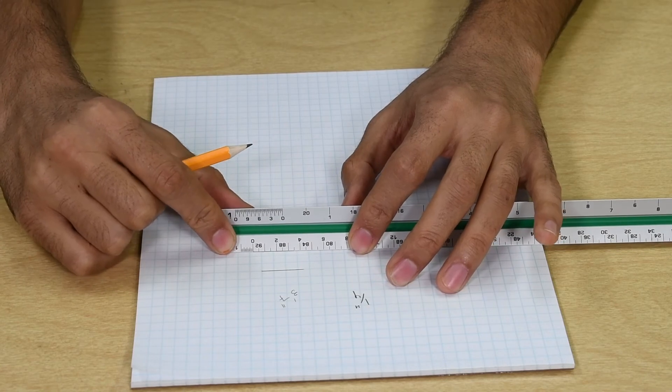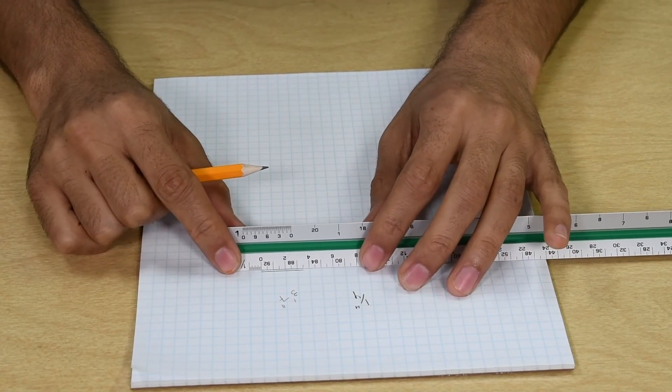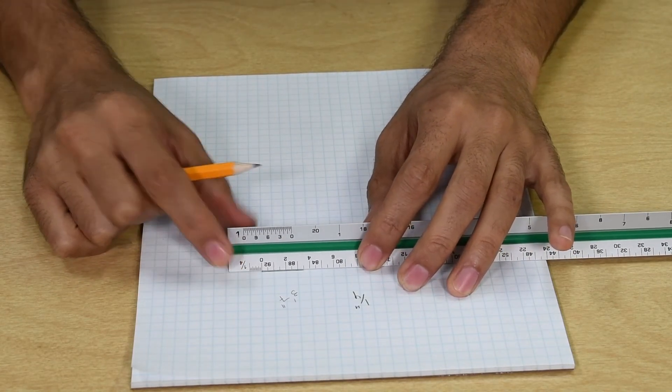First you measure the number of feet. You put the end of the line at the zero mark and count the number of whole feet.